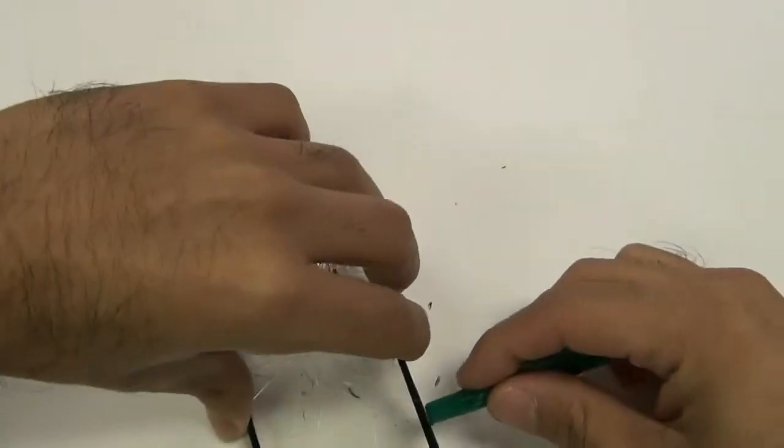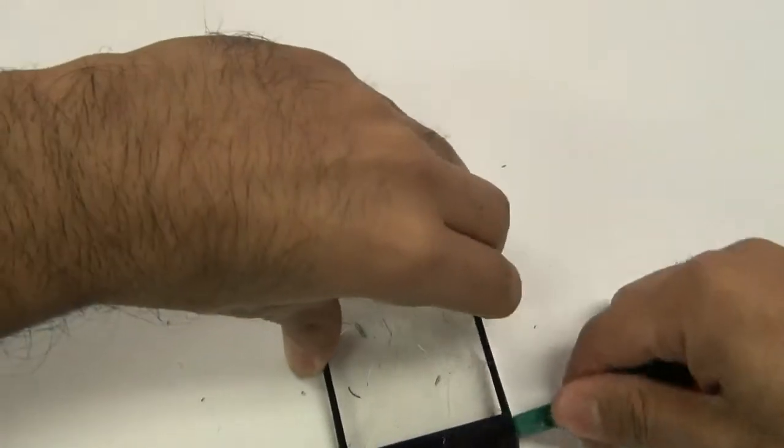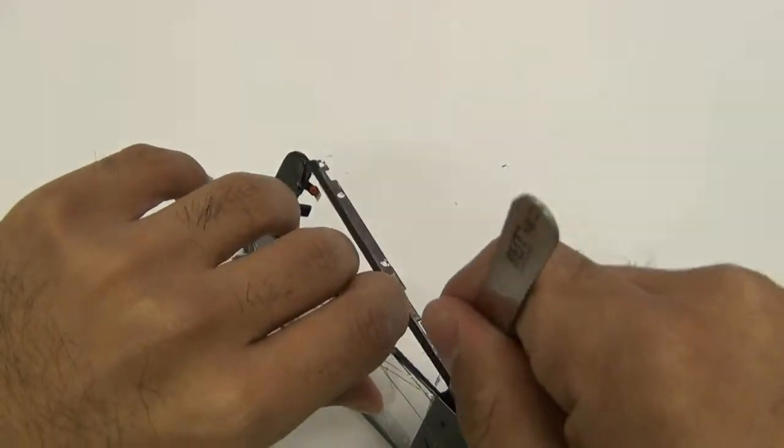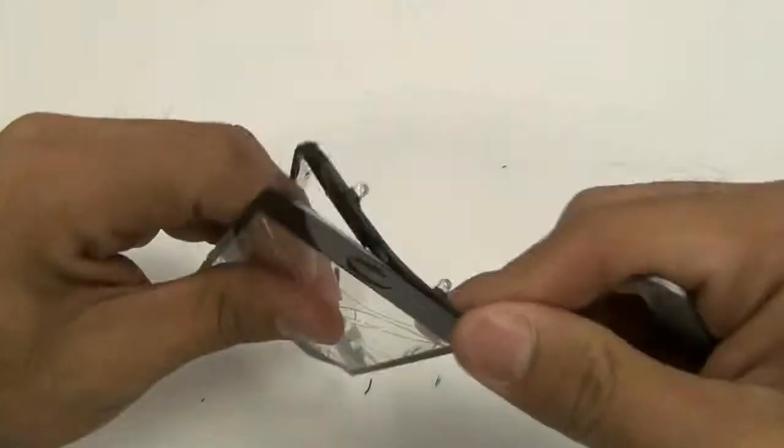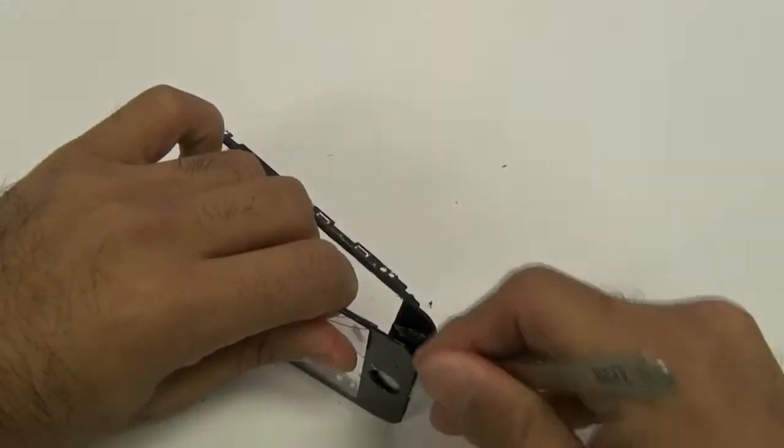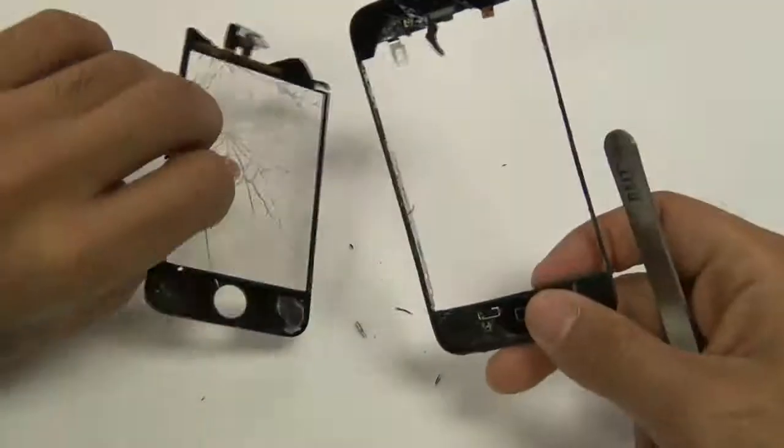Once you are able to go ahead and remove the screen, there might be glass shards still attached. You will want to go ahead and clean up all of the glass shards, as well as remove the adhesive still attached to the mid-frame as you will be applying new adhesive.